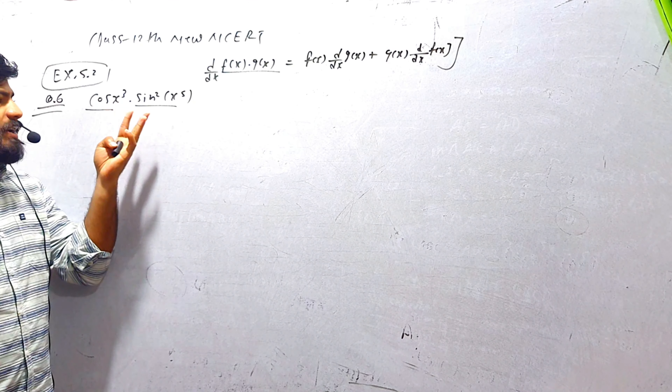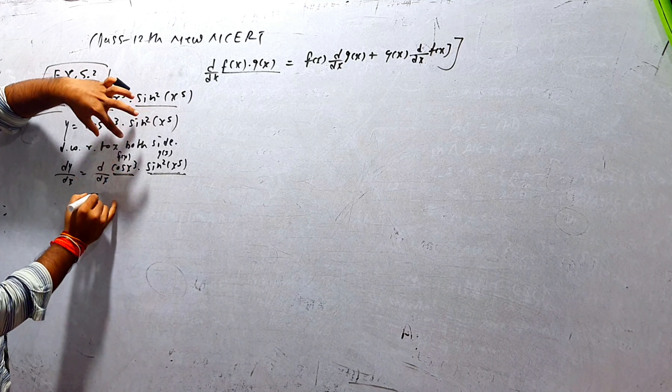Differentiation with respect to x, दोनों पक्षों का। dy/dx = d/dx of [cos(x³) · sin²(x⁵)]। यहाँ x⁵ angle है। cos(x³) हुआ first function f(x) और sin²(x⁵) हुआ second function g(x)। Formula लगाएंगे: f(x)·d/dx[g(x)] + g(x)·d/dx[f(x)]।